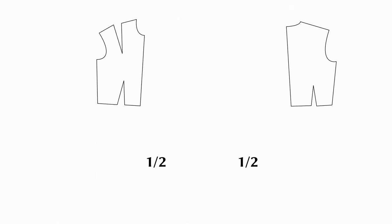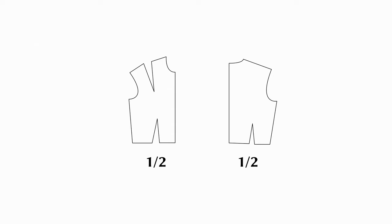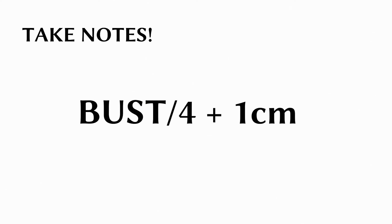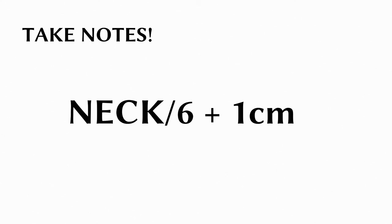When drafting the pattern, we will draw half of the front and half of the back, so we won't use the entire circumference measurements we got. To get the numbers we need, pick up a calculator and calculate it along with me. Divide the bust and the waist by 4 and add 1 cm or 3/8 of an inch to the final number for a seam allowance. Divide the neck measurement by 6 and add 1 cm or 3/8 of an inch.